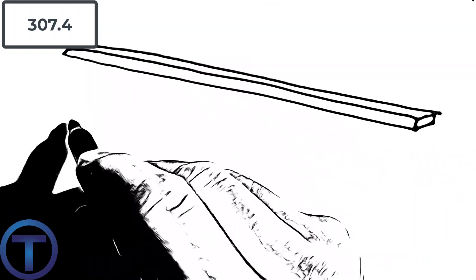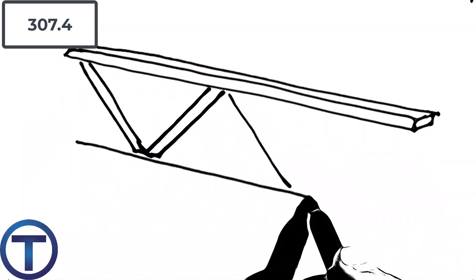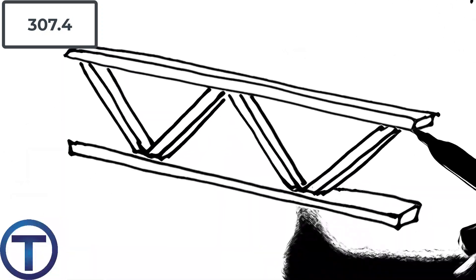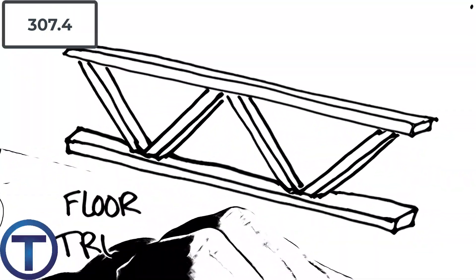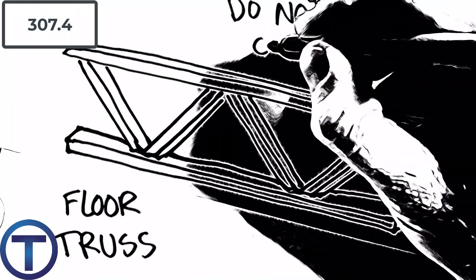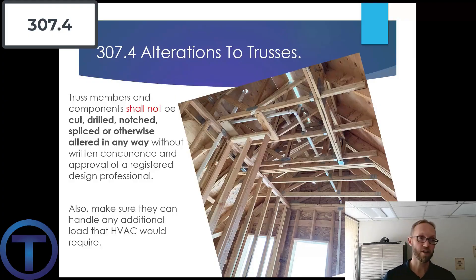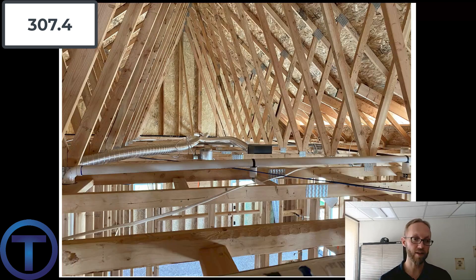Floor trusses are easy for running pipes through because there's a lot of open space between support members, but because they're a truss you are never to cut, notch, drill, or do anything to the structure. That goes for roof trusses as well — we can run our pipes through them but there is no reason to be cutting or affecting those trusses at all.